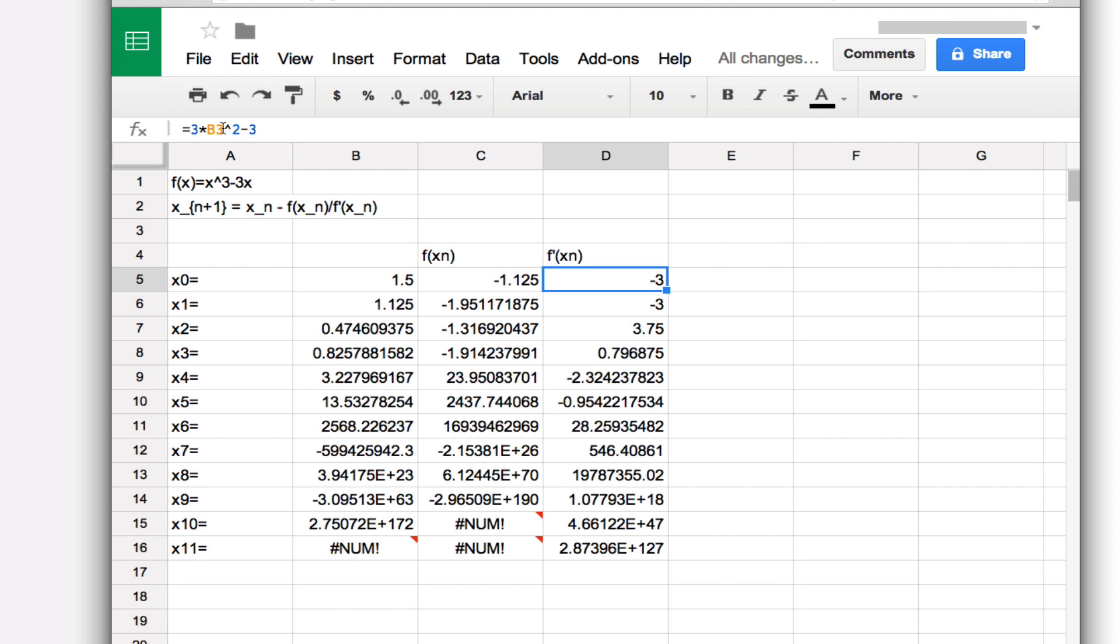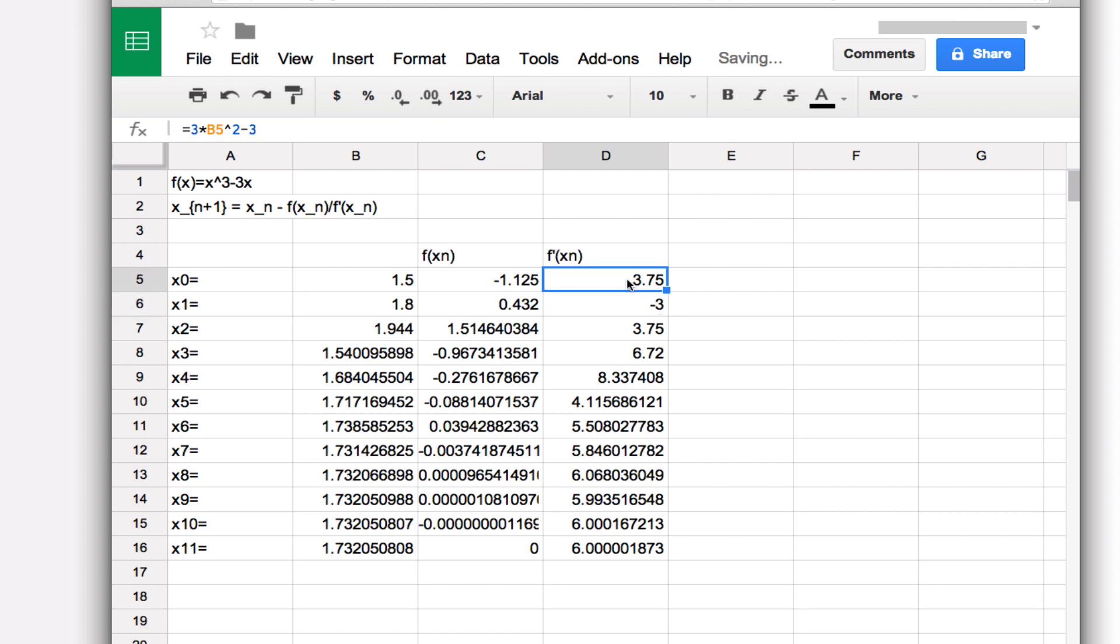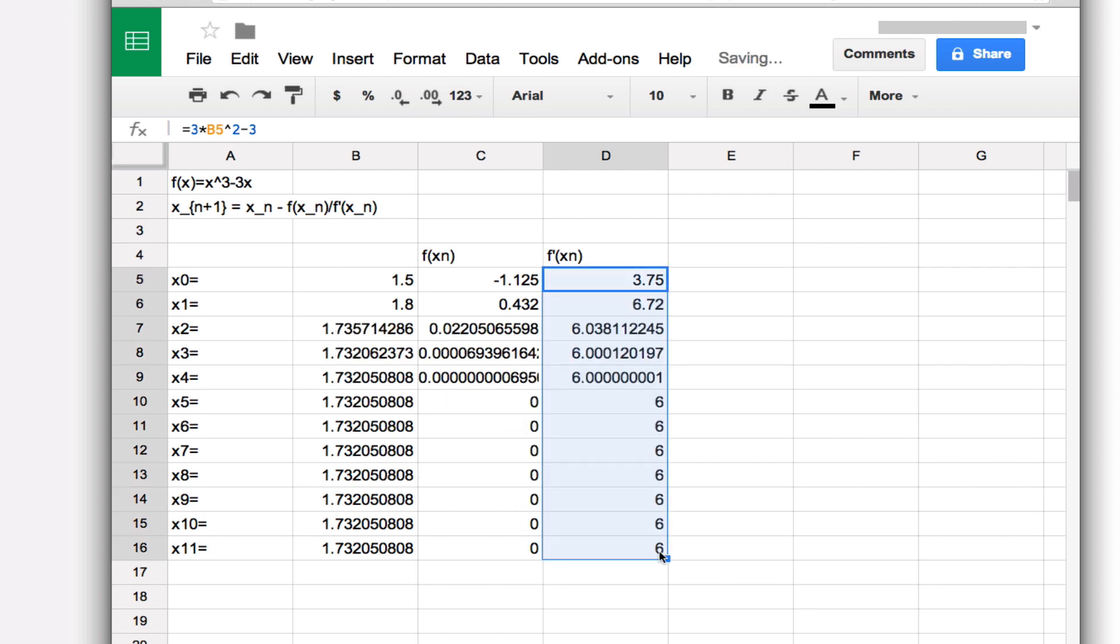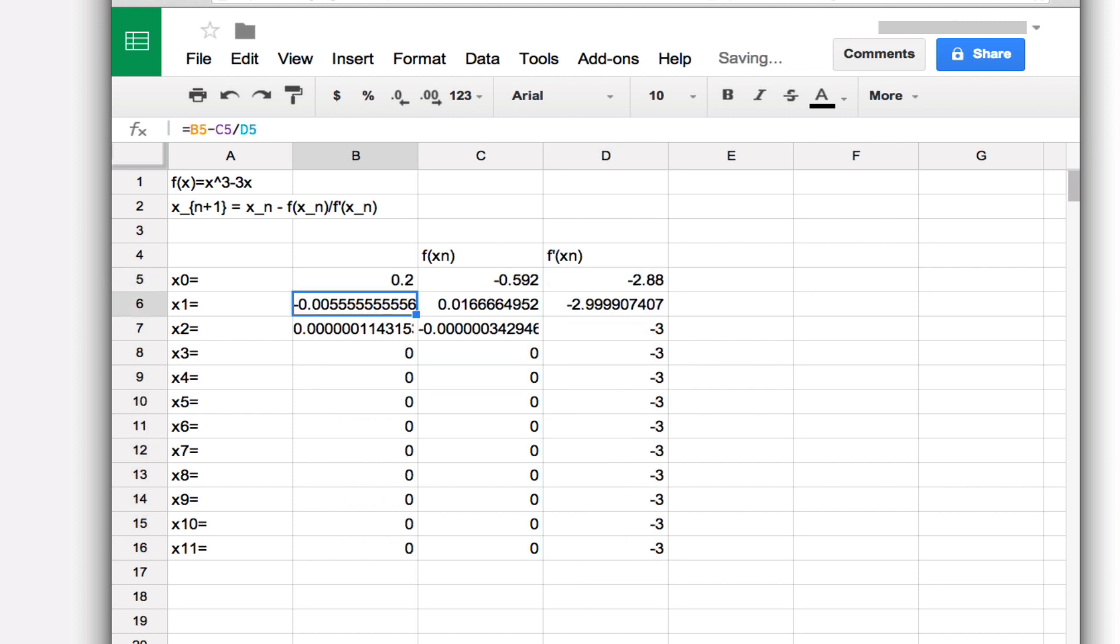I see my original formula should have had b5 in it, not b3, so we have to redo that. Now if I copy this correct formula down... that's better. If we're at 0.2 here, as we thought, it does converge to zero. Last time it was just lucky that it did with the wrong formula. But now that we've corrected it, we can see that 0.2 is not going to work well, but 1.5 does.